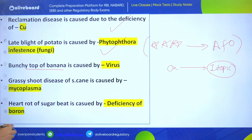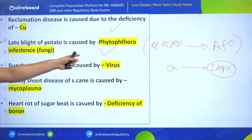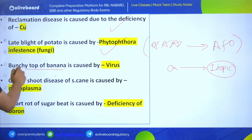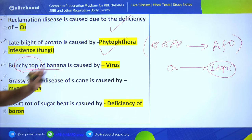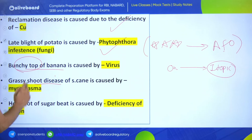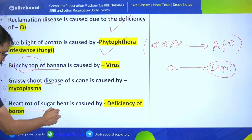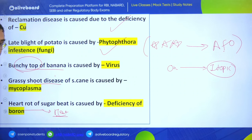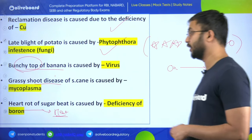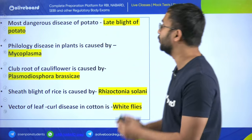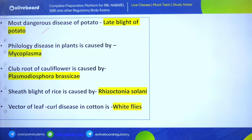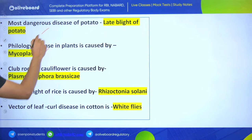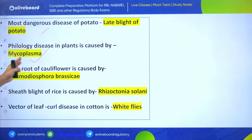Bunchy top of banana is a NABARD, AFO, and various RAO exams' favorite question - it is caused by a virus. Grassy shoot disease in sugarcane is caused by mycoplasm. Heart rot of sugar beet is caused by deficiency of boron. Remember boron is related to heart rot. Late blight is the most dangerous disease of potato. Phyllody disease in plants is caused by mycoplasm.